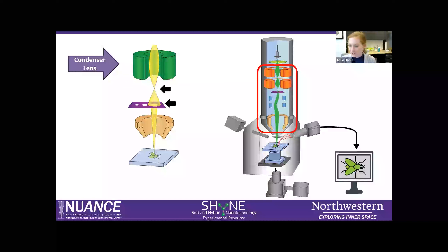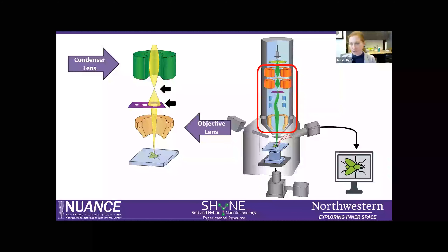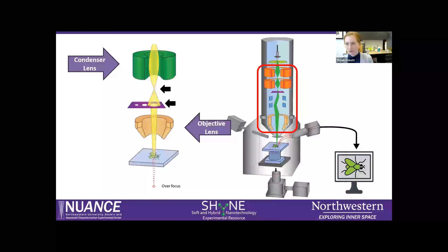After the condenser lens and objective lens aperture, the beam passes through the objective lens. Changing the current through the objective lens changes the final crossover of the beam at the specimen's surface. When you're at the microscope and turn the focus knob, you're changing the crossover height to either under-focus or over-focus. You want the beam to cross over at the sample surface for best focus, which is where you get the smallest probe.